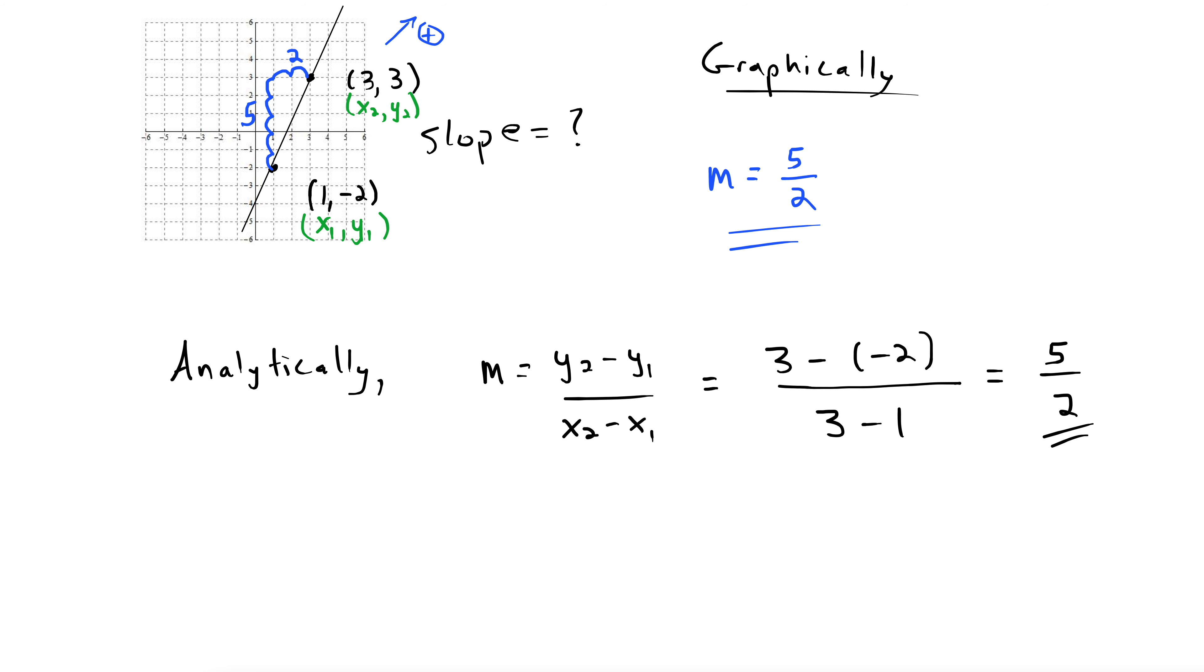Say we chose our points differently. So let's take another look at this. Say instead we chose this one to be x1, y1. And then down here we chose this one to be x2, y2. Well, let's see what happens. I'll do this in red.